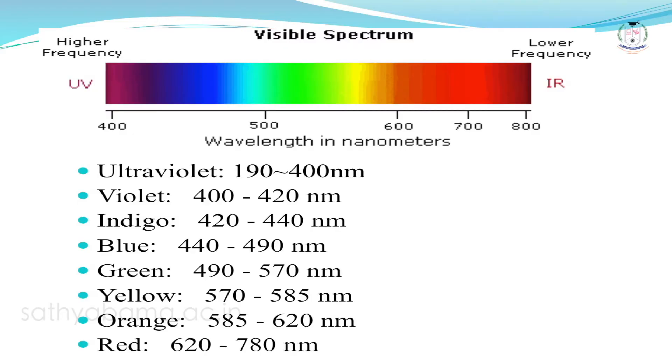In most spectroscopy, we use radiation from UV to radio waves. The visible radiation includes several colors — violet, indigo, blue, green, yellow, orange, and red — whose wavelengths range from 400 to 800 nanometers.